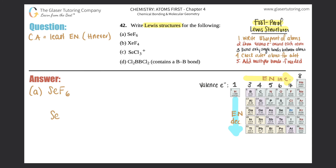Between selenium and fluorine, selenium is the less electronegative element, so selenium goes in the middle surrounded by six fluorines: one, two, three, four, five, six. That's the blueprint - just find out who's in the center. Now draw the valence electrons around each atom: selenium has six valence electrons and each fluorine has seven, so draw six dots around selenium and seven around each fluorine.